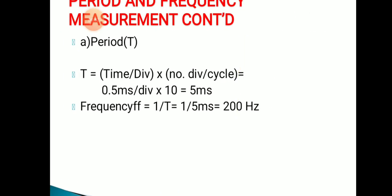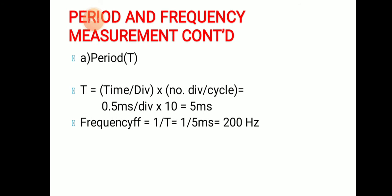Consider one example. T equals time per division multiplied by number of divisions per cycle, which equals 0.5 milliseconds per division multiplied by 10 divisions per cycle, giving T equals 5 milliseconds. To calculate the frequency: F equals 1 divided by T, that is 1 divided by 5 milliseconds, giving 200 hertz.